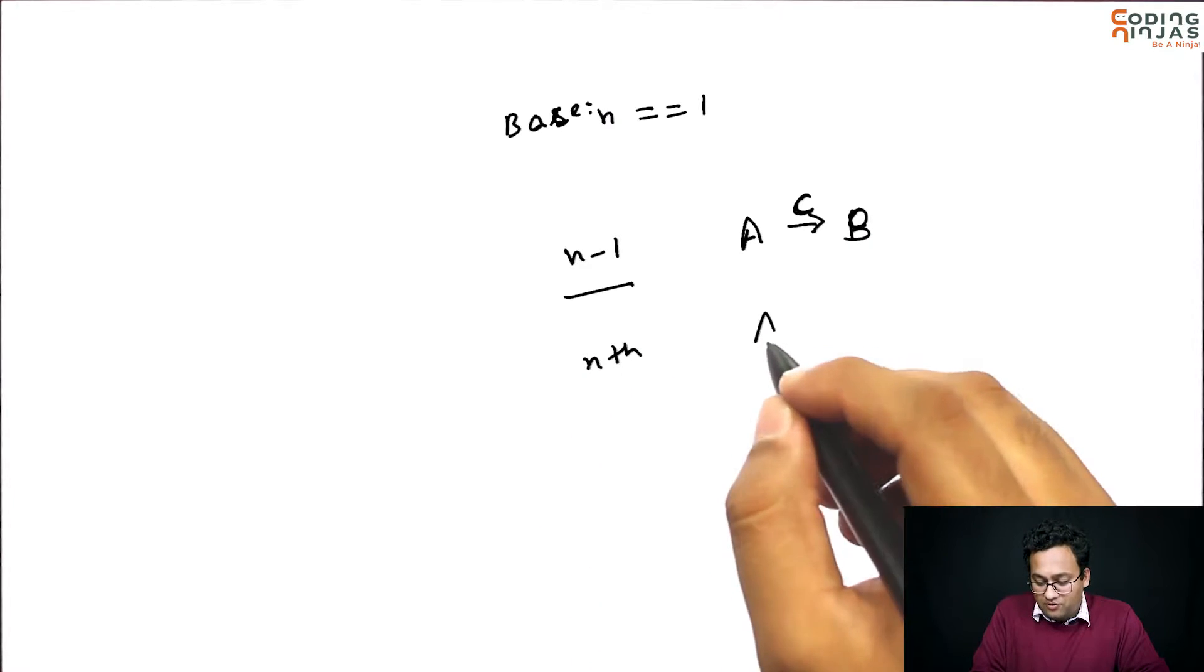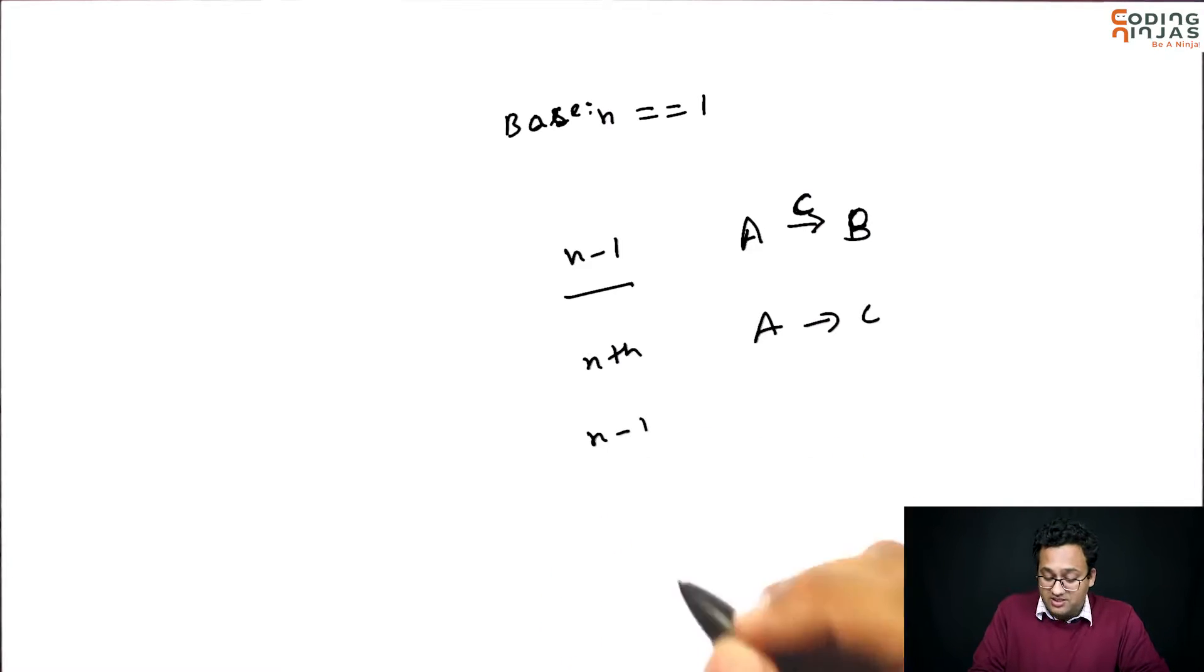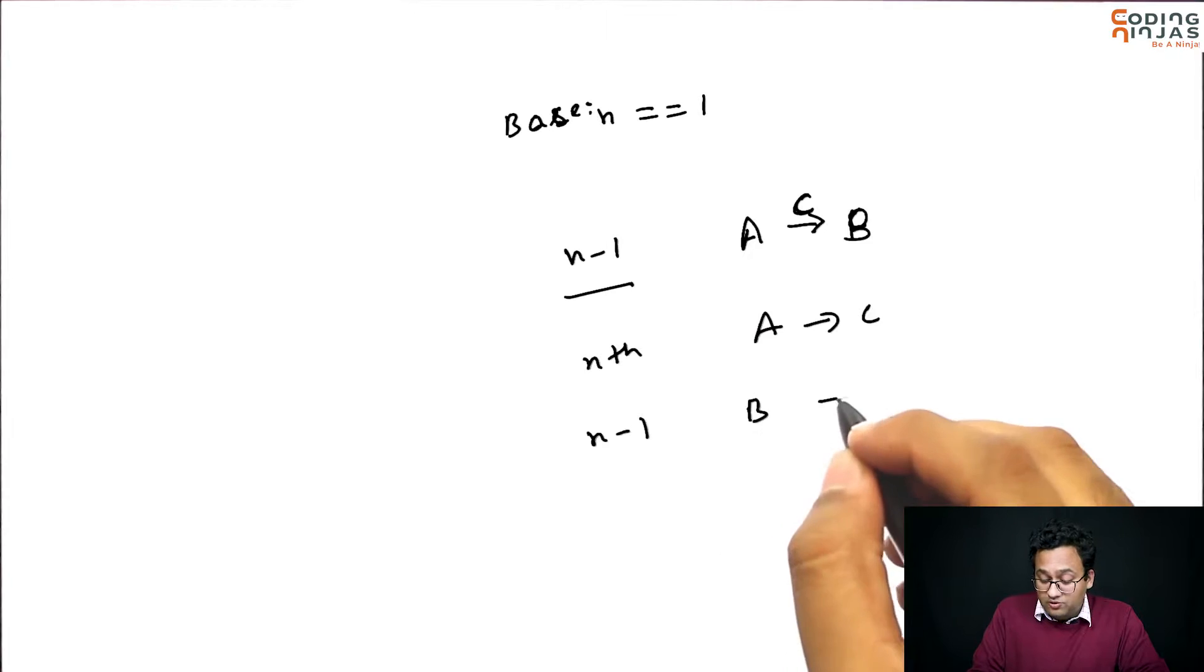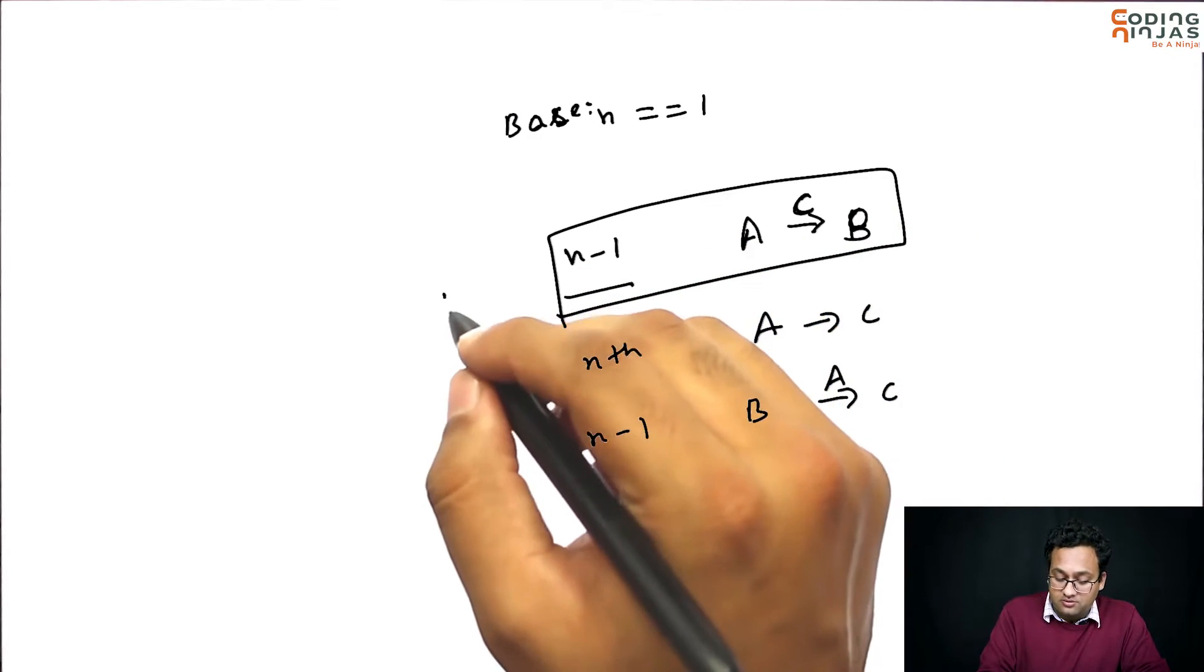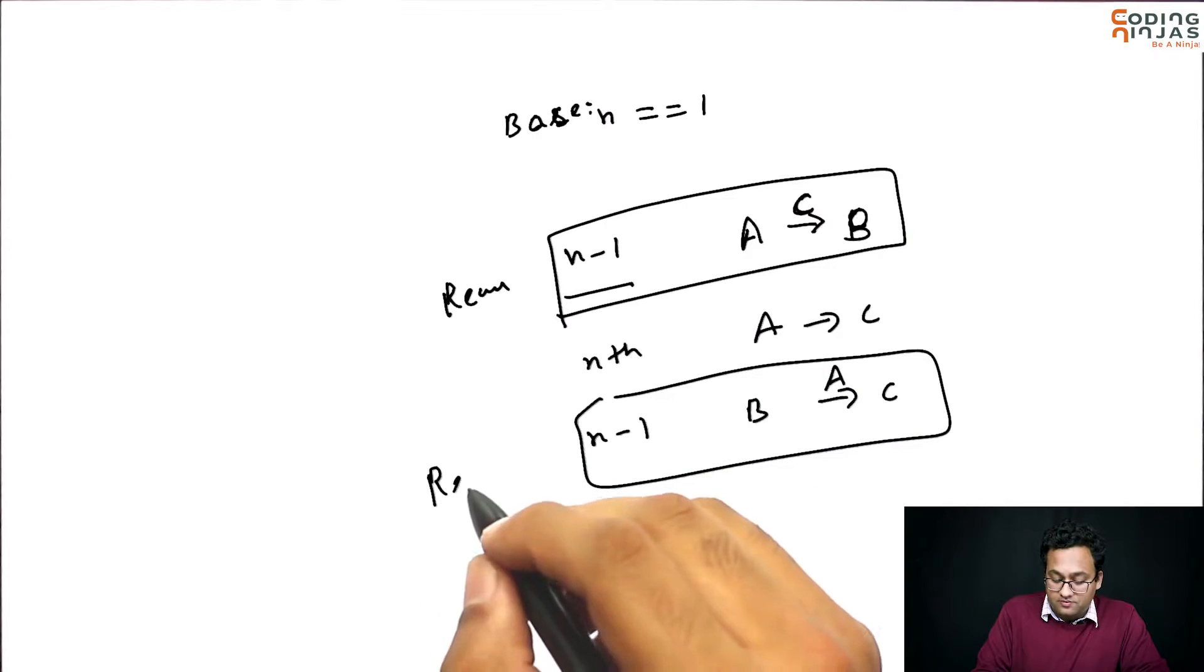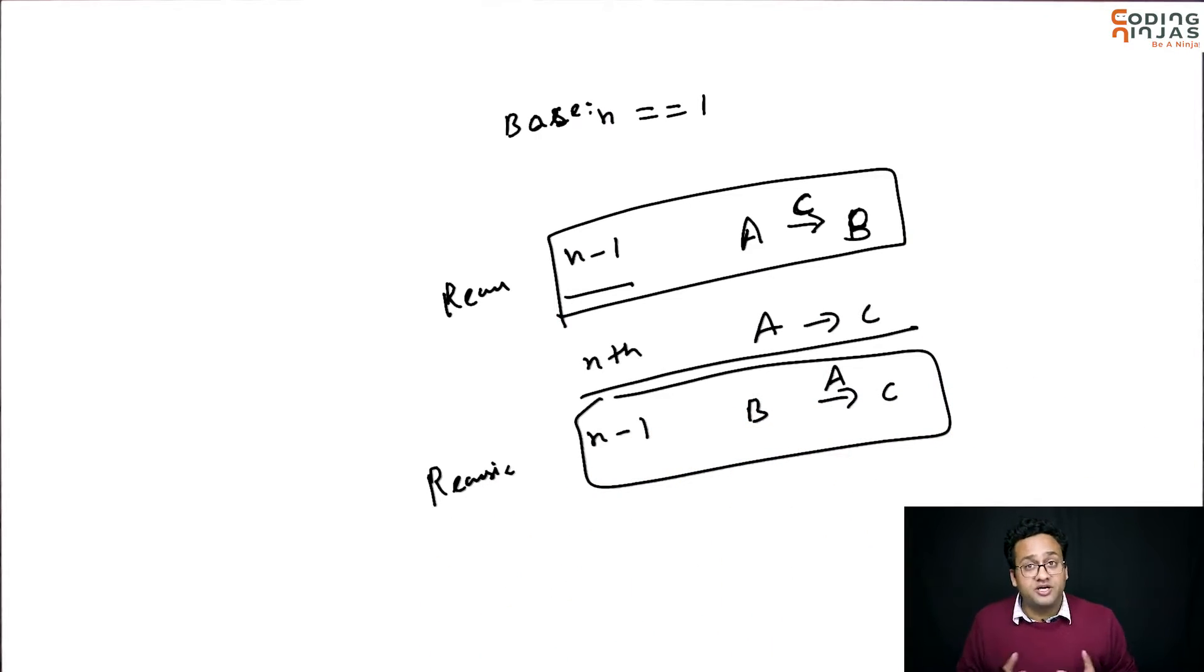I will move n minus 1 from A to B using C as the helper. Nth will go from A to C. Now, n minus 1 will go from B to C using A. That is what we need to do. This is a recursion call and this is a recursive call. This is a single step for which you do not need recursion. You will just print it out.